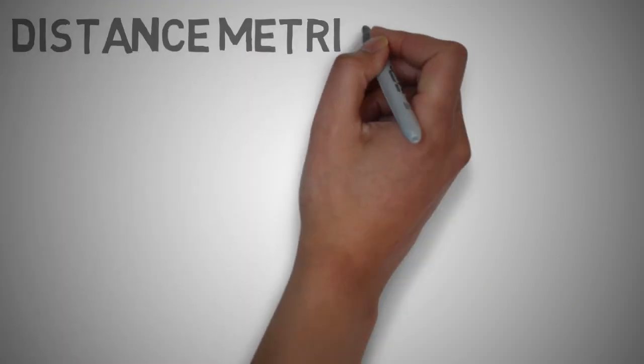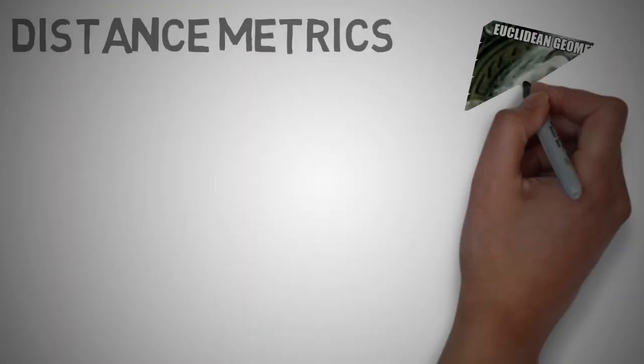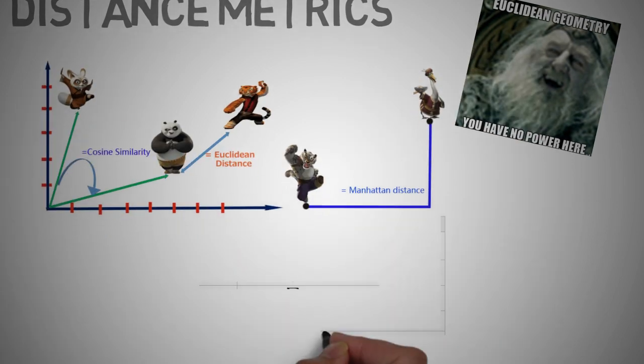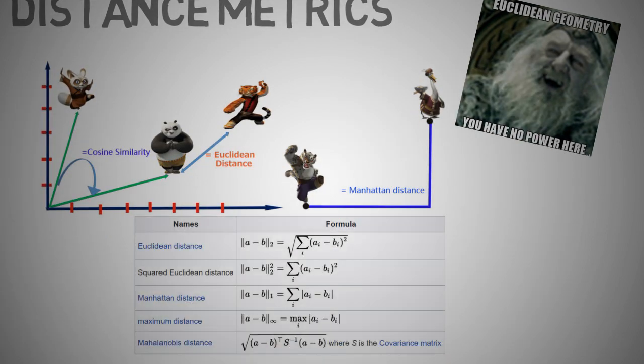Distance Metrics. In a previous lecture of the series, we spoke about alternatives to the commonly used Euclidean distance, which are squared Euclidean distance, Manhattan or city block distance, maximum distance, and Mahalanobis distance.